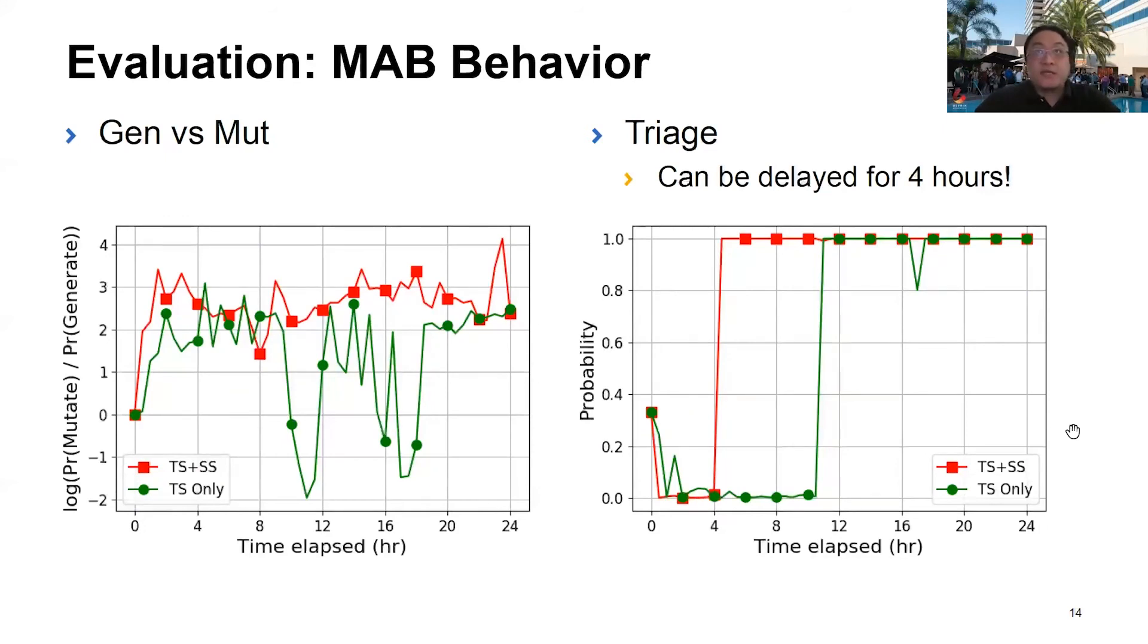We then take a look at how the adversarial MAB algorithm behaves during the fuzzing process. We see that with both seed selection and task selection, MAB quickly decides that mutation is better than generation. But without seed selection, mutation is not as effective, so MAB will actually go back to favor generation from time to time.